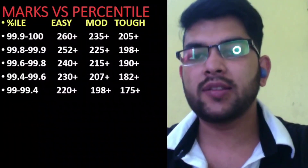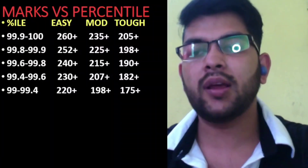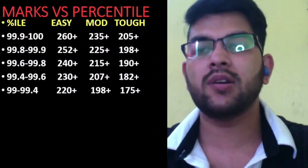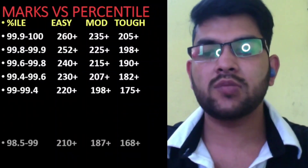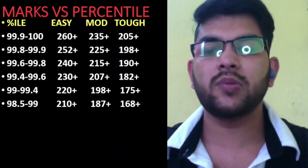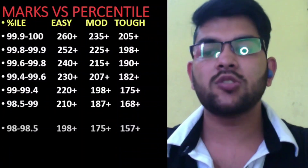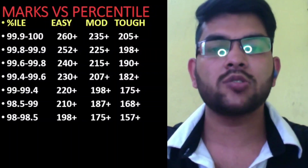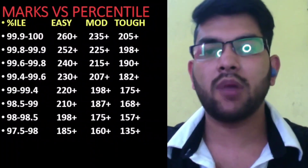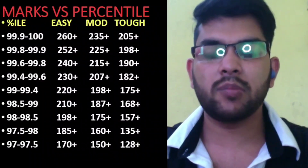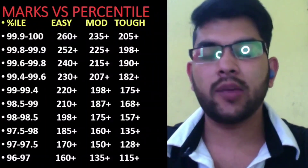Please try to subscribe this channel, like and share this video so I can provide more detailed videos in future related to JEE Mains, JEE Advanced, and other entrance exams and counseling. For 98.5 to 99 percentile, your marks would be 187 plus for moderate paper — for easy and tough you can check sidewise. For 98 percentile or above, your marks would be at least 175. For 97.5 percentile, your marks would be 160 plus. For 97 percentile, 150 plus. For 96 percentile, 135 or more.